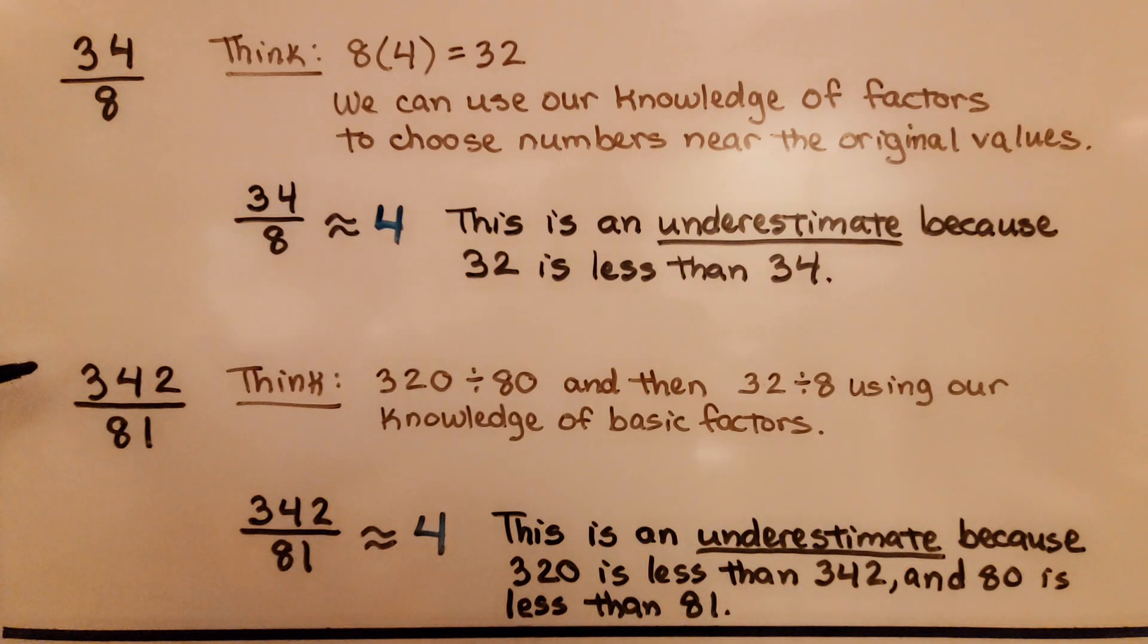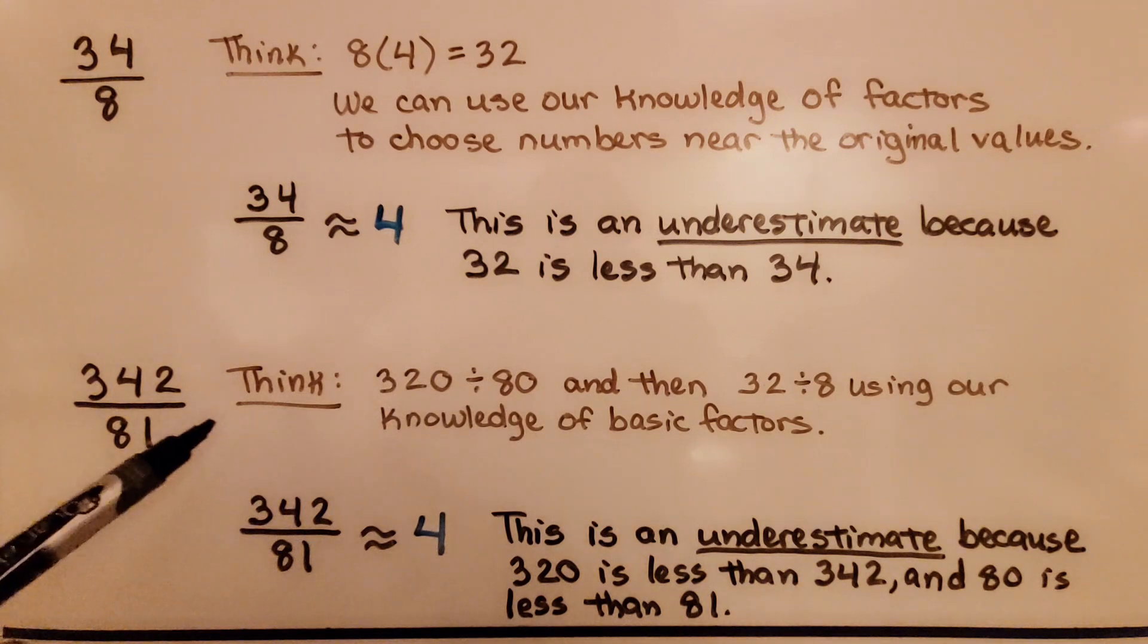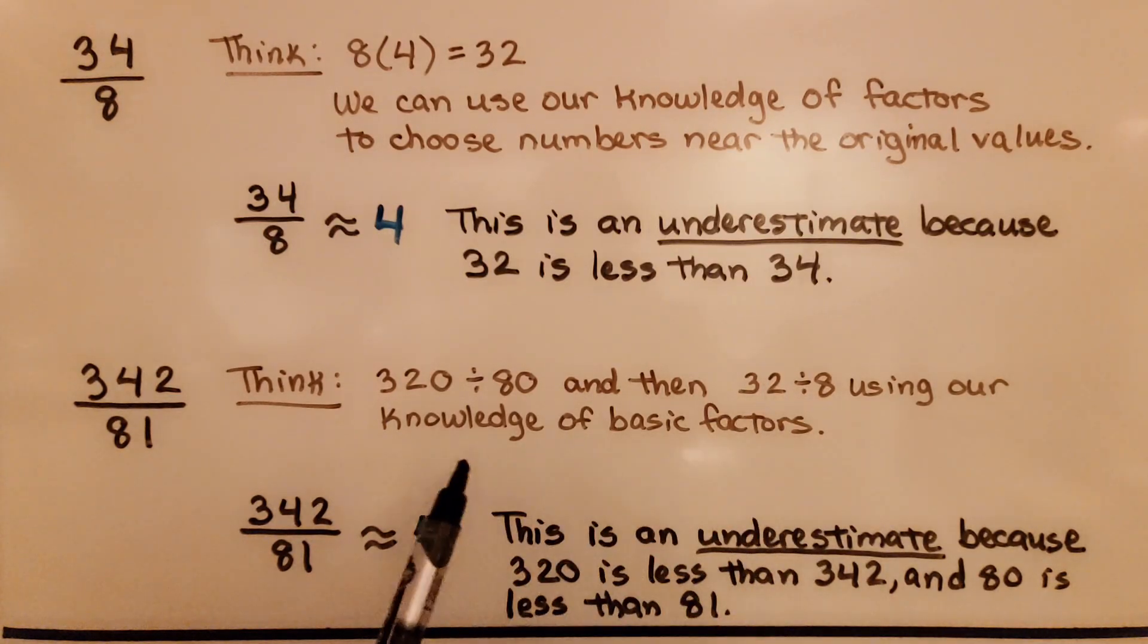Here we have 342 divided by 81. We can think of this one. We think 320 divided by 80, that would be 4. And then we think, well, 32 divided by 8, using our knowledge of basic factors, we can say it's approximately 4. And this is an underestimate because 320 is less than 342 and 80 is less than 81.